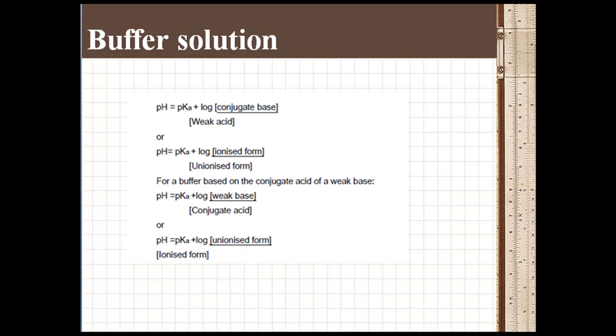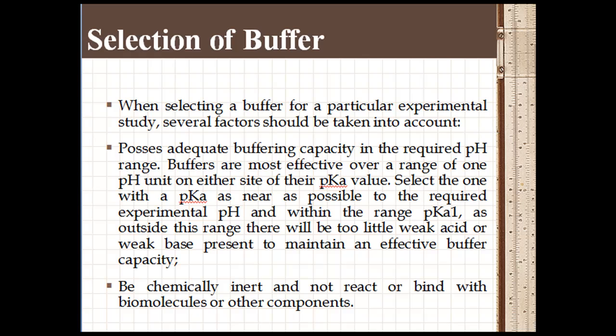When selecting a buffer for a particular experimental study, several factors should be taken into account. It should possess adequate buffering capacity in the required pH range. Buffers are effective over a range of 1 pH unit on either side of their pKa value. Select the one with a pKa as near as possible to the required experimental pH and within the range of that value.